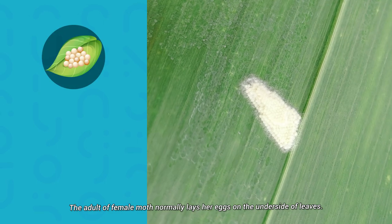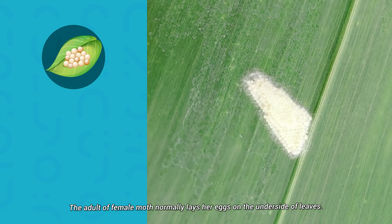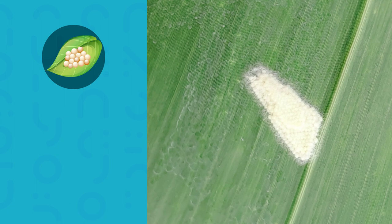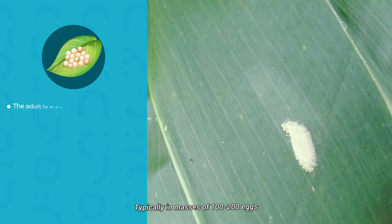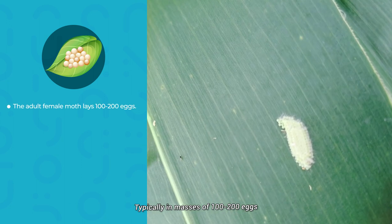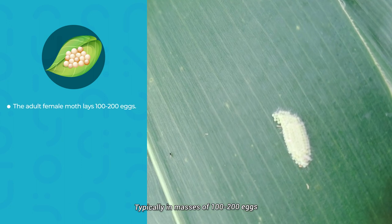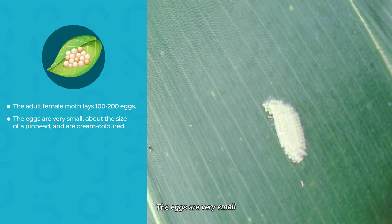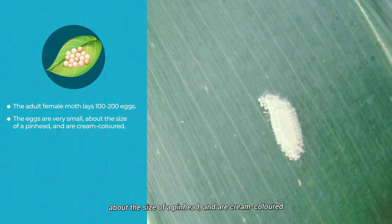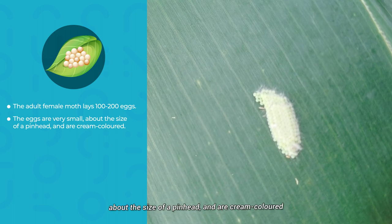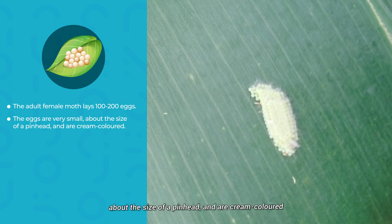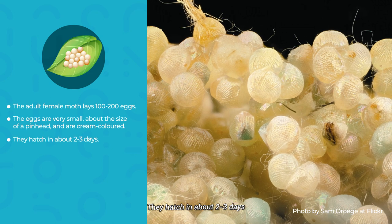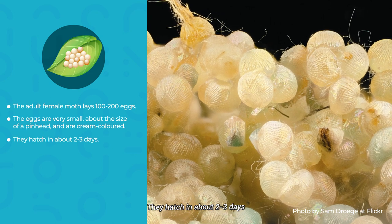The adult female moth normally lays her eggs on the underside of leaves, typically in masses of 100 to 200 eggs. The eggs are very small, about the size of a pinhead, and are cream-colored. They hatch in about 2 to 3 days.